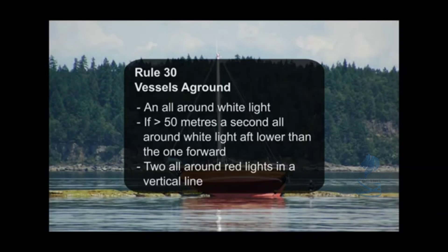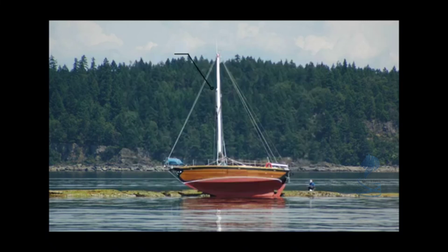Rule 30, Vessels Aground: an all-around white light — if greater than 50 meters length overall, a second all-around white light, aft, lower than the one forward. Two all-around red lights in a vertical line. Day shape: three balls in a vertical line.